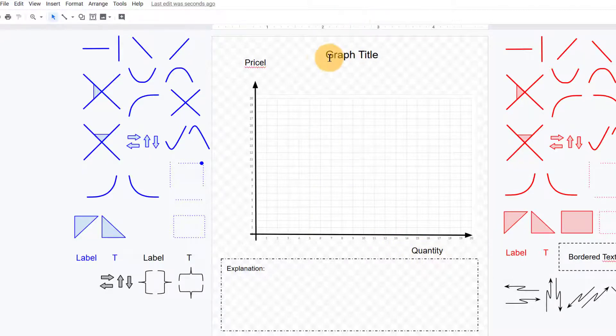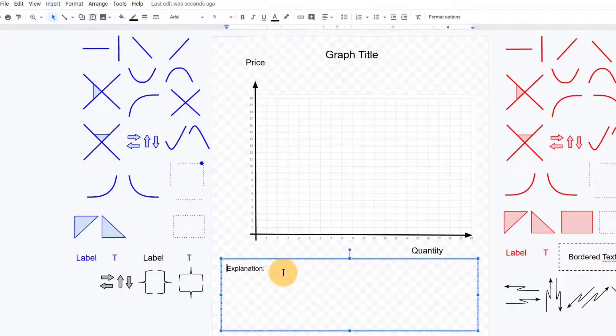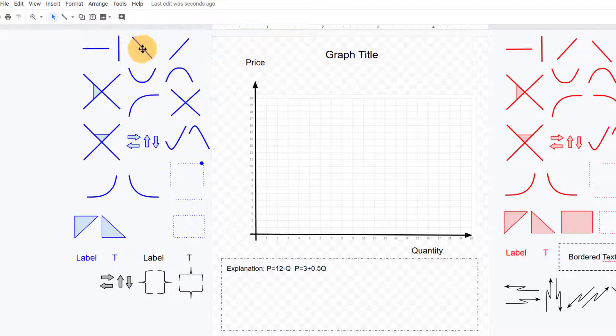And down here in the explanation, let me type a couple of equations if we wanted to graph supply and demand lines. So let's suppose our demand equation is p equals 12 minus q. The slope is just minus 1 there. And let's suppose that the supply curve is p equals 3 plus 0.5 or 1 half q. Let's go ahead and graph those real quickly.